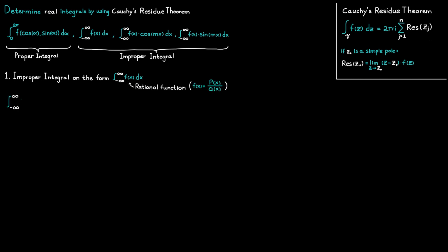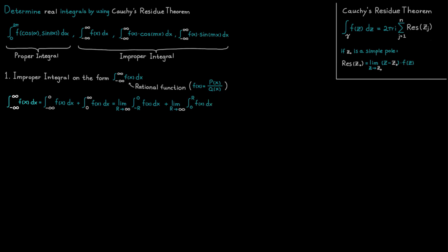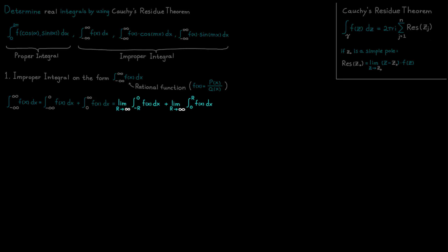First, we have to remember what it means to determine an integral from minus infinity to positive infinity. The definition from calculus is that this integral is equal to the sum of integrals from minus infinity to zero and from zero to infinity. Since our mathematical operations are bad at handling infinity, we replace it with a variable and let that variable approach infinity, so the integral only exists if both limits exist.